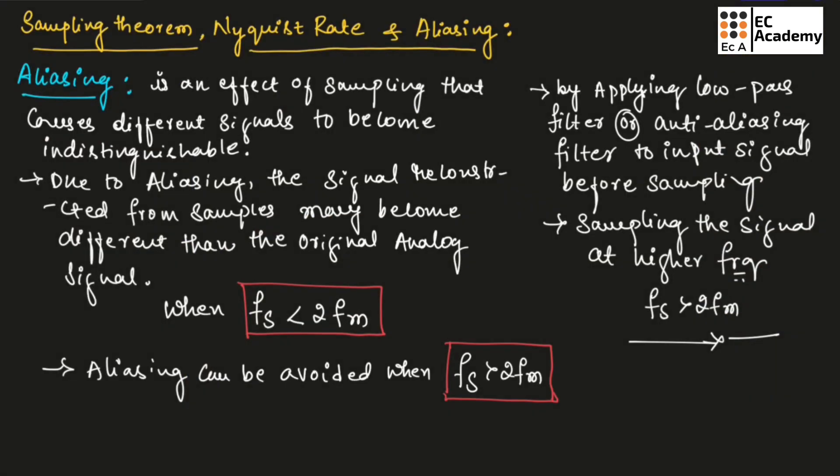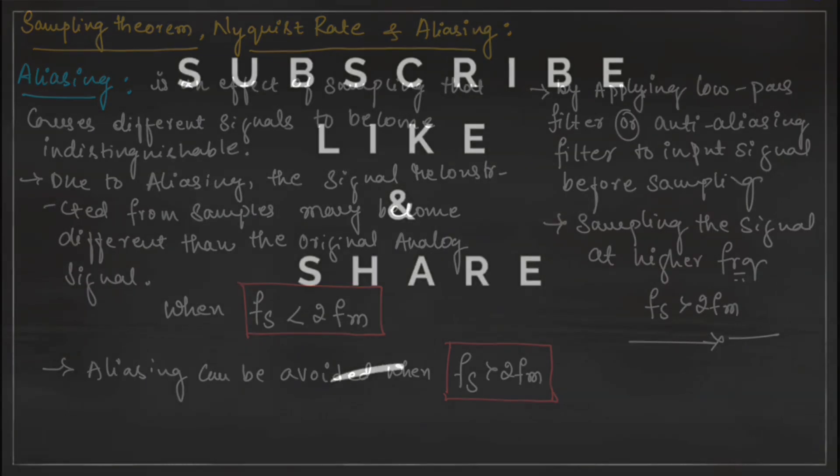This is about sampling theorem, Nyquist Rate, and aliasing. Hope you have understood the topic. Thank you.